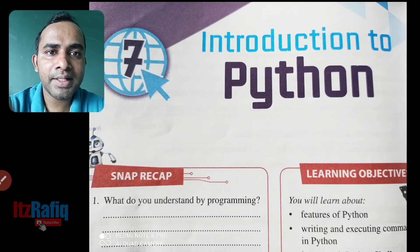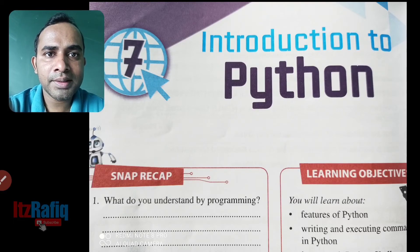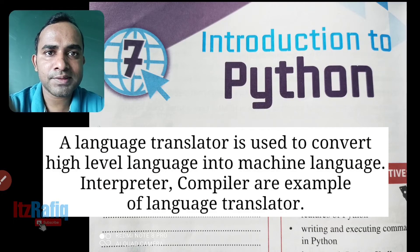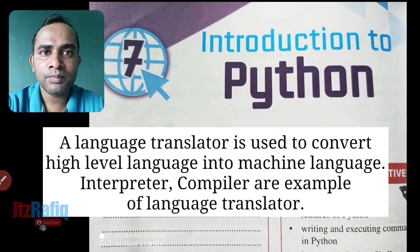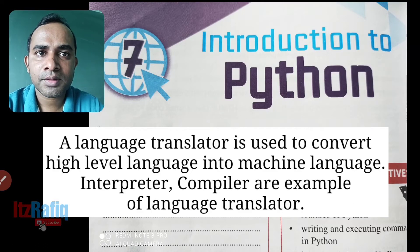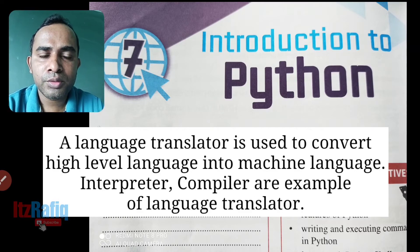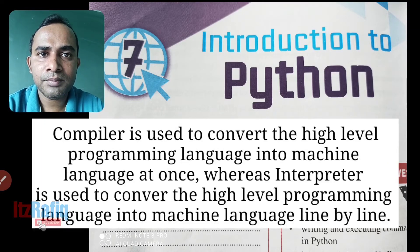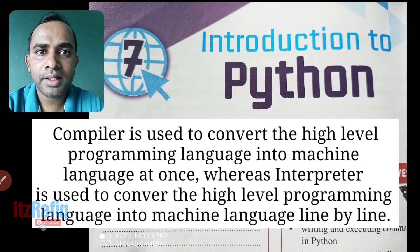Python is a high-level programming language and it is an interpreter-based programming language. Now a question may arise: what is an interpreter? There are two types of language translators — interpreter and compiler.